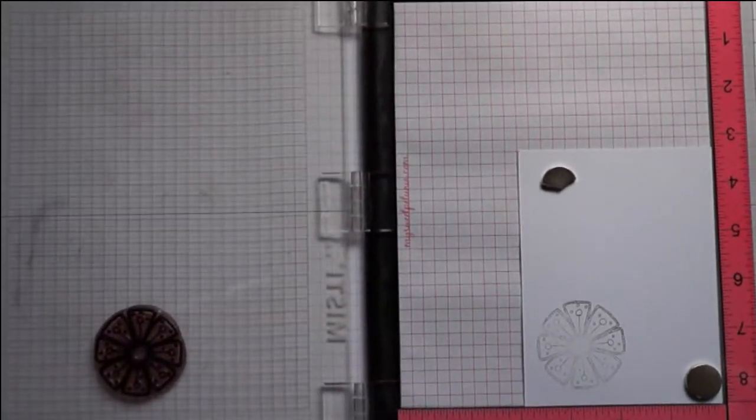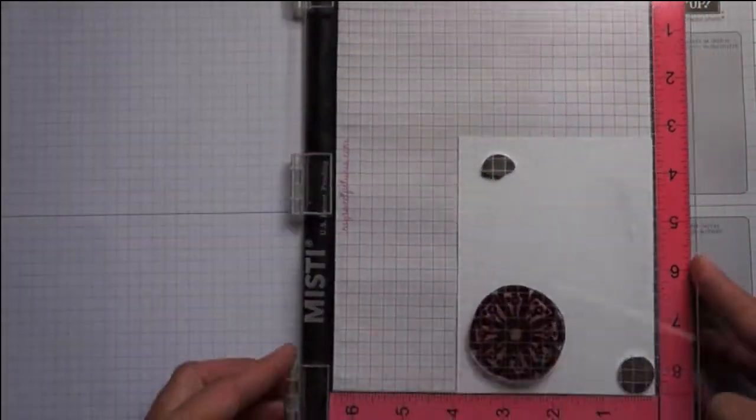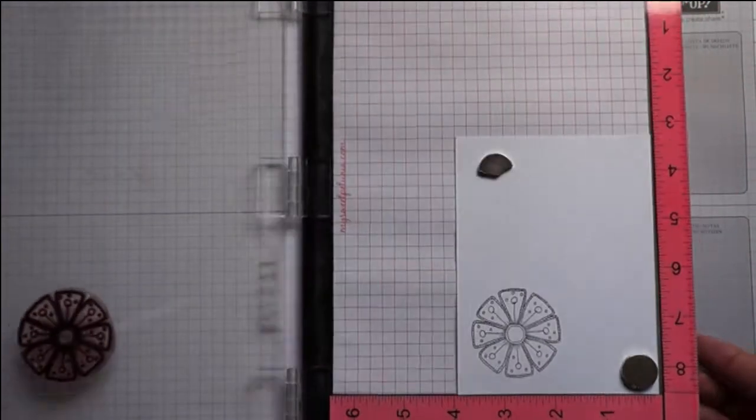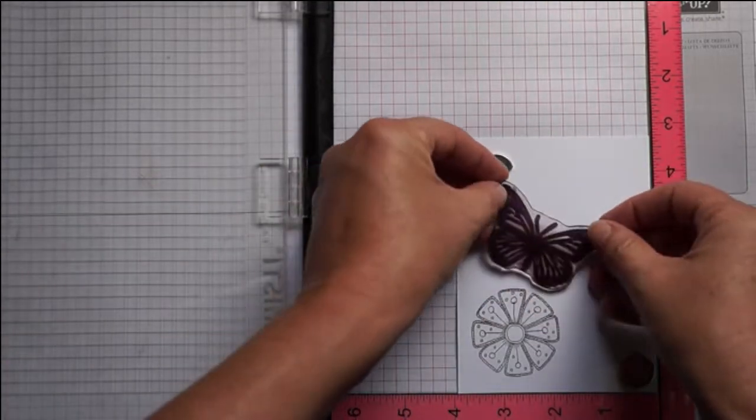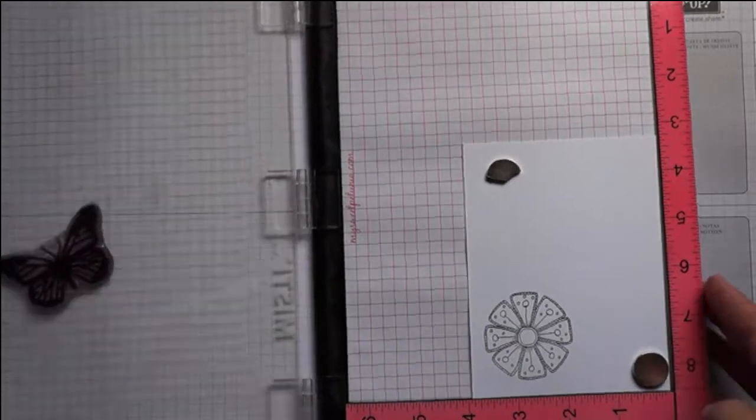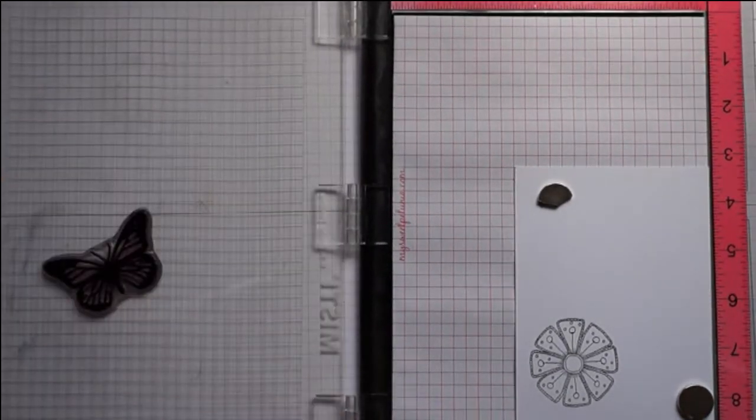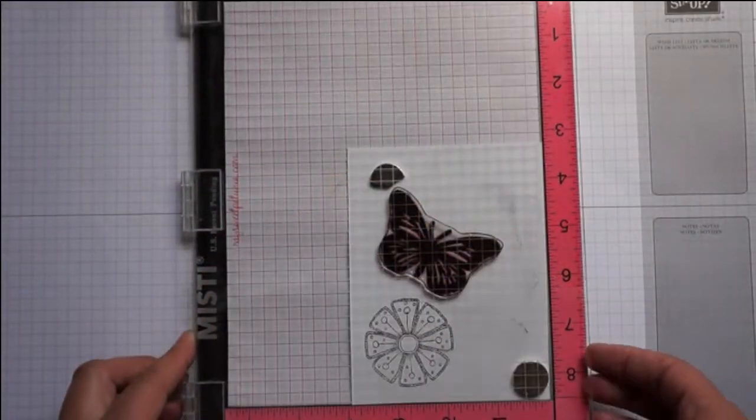And it's usually at the end of making your card when you want to stamp something else and you mess it up and then you just want to throw it away. So this really helps. It's a great way to make sure you get nice clean crisp stamps.